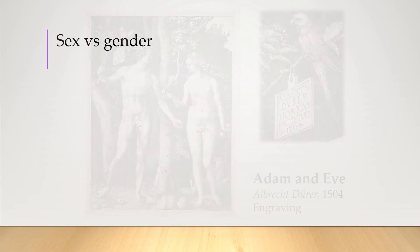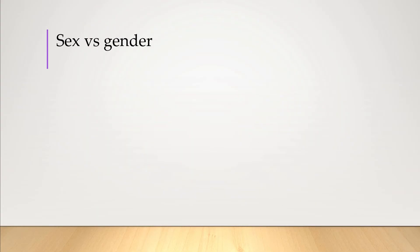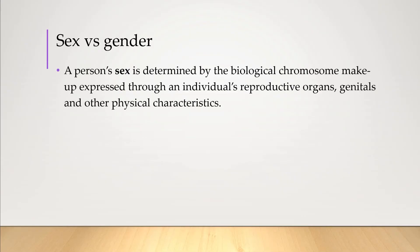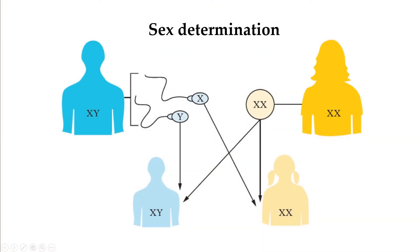It's very important to define some key terms, because they can mean different things in different contexts. For our purposes, a person's sex is determined by the biological chromosome makeup, expressed through an individual's reproductive organs, genitals, and other physical characteristics. In typical circumstances, humans can either have two X chromosomes that make them female, or an X and a Y, which gives them male physical characteristics.